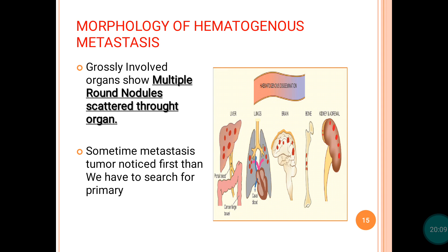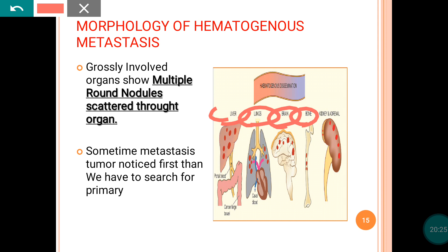This figure is taken from the Harshmohan textbook of pathology. You can see what happens when the tumor reaches different organs like liver, lung, brain, bone, and kidney — it forms round multiple nodules over the organ. That is how metastasis is seen: multiple round nodules.